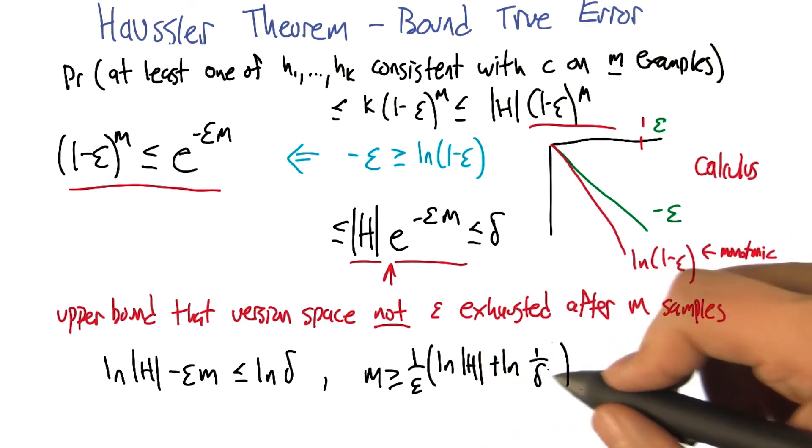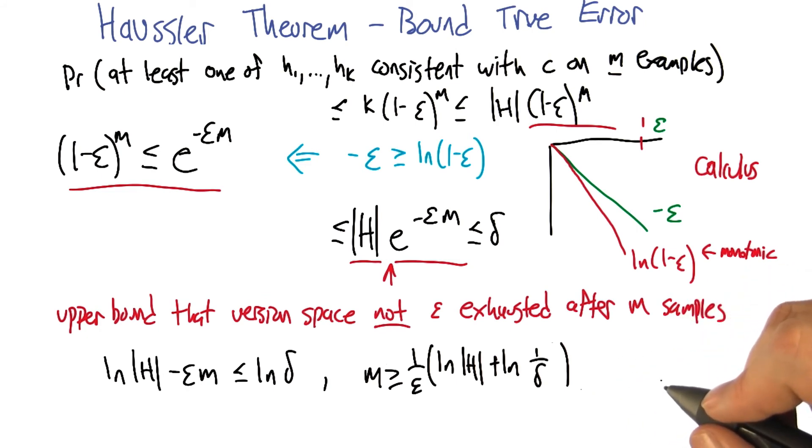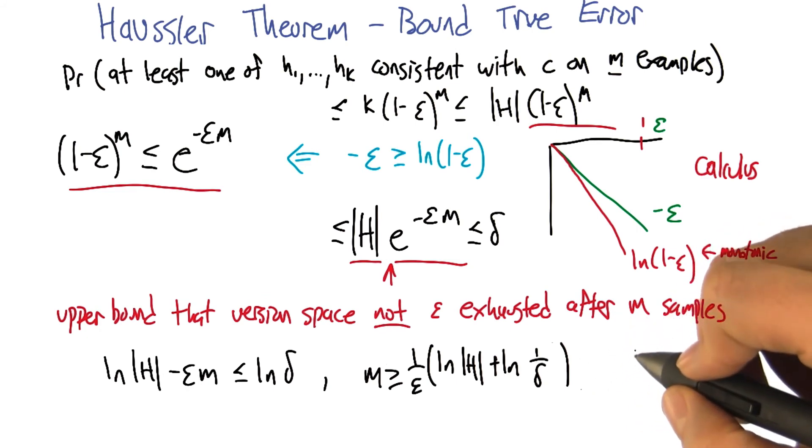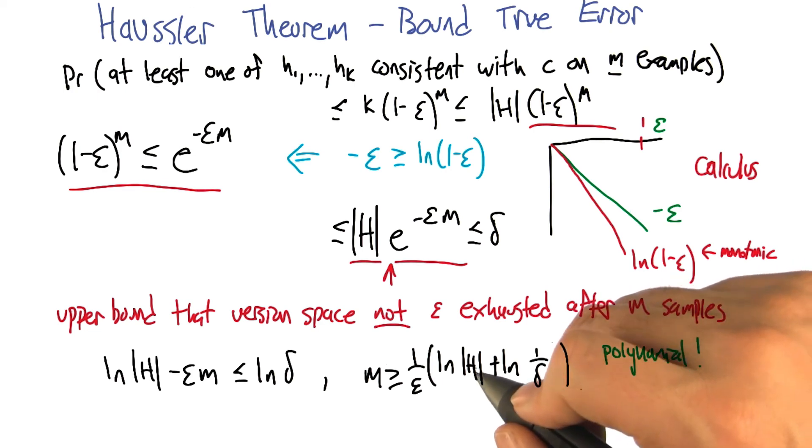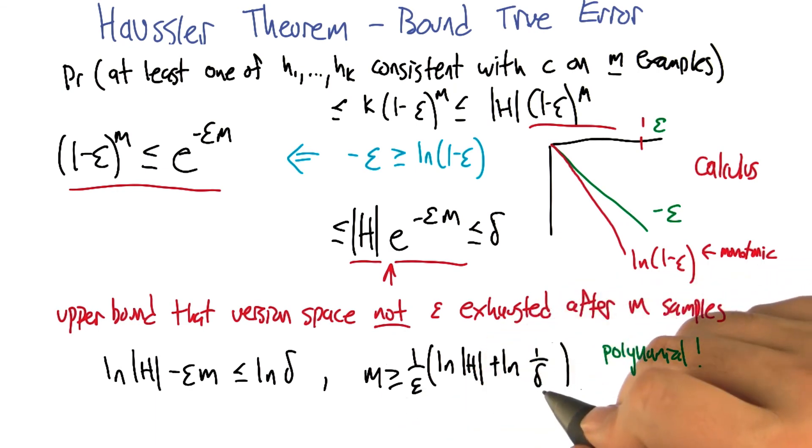And that is polynomial in 1 over epsilon, 1 over delta, and the size of the hypothesis space. Indeed. Nice. So that's pretty cool. It is pretty cool. So it tells us, if you know the size of your hypothesis space and you know what your epsilon and delta targets are, sample a bunch and then you'll be okay. That's pretty good.